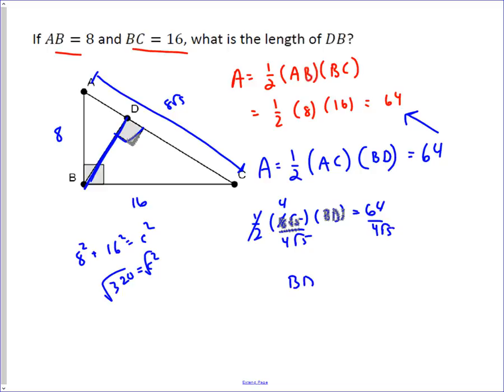So BD equals sixty-four over four, which is sixteen, and then we multiply the top and bottom by root five, so we end up with sixteen root five over five.